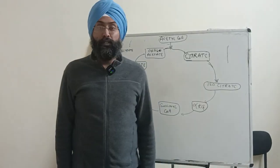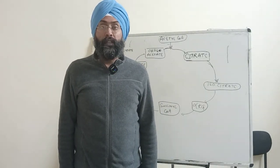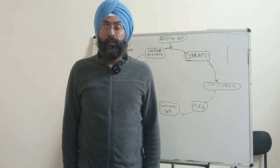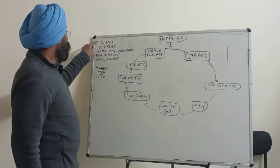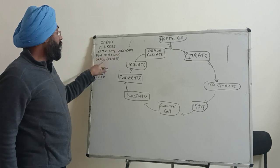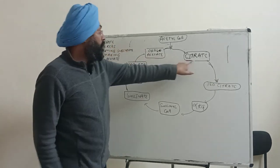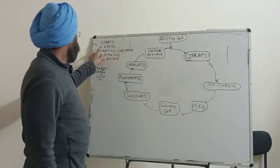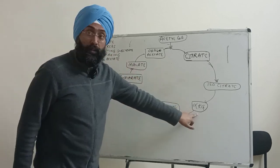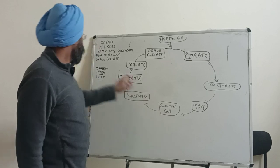In today's video we will discuss how to remember the TCA cycle in under one minute. Remember the mnemonic: 'Citrate Is Craps Starting Substrate For Making Oxaloacetate.' Citrate is for citrate, I is for isocitrate, craps is for alpha-ketoglutarate, starting is for succinyl-CoA, substrate is for succinate, for is for fumarate, making is for malate, and oxaloacetate is for oxaloacetate.